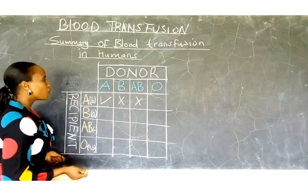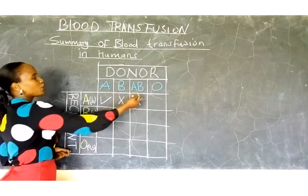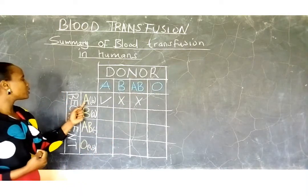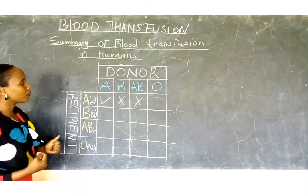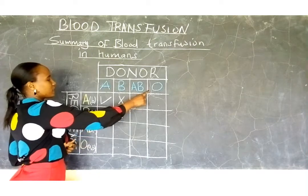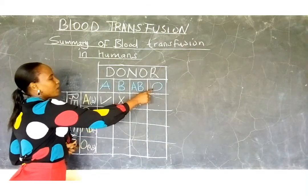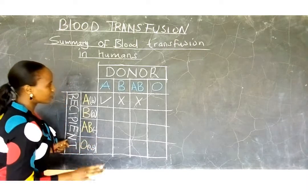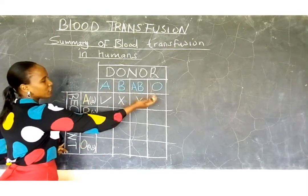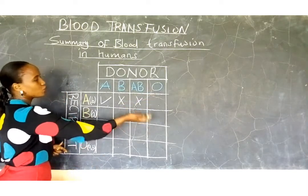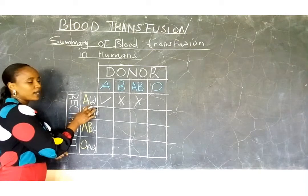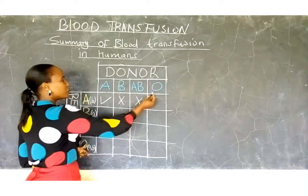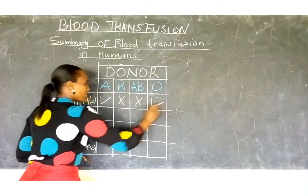What if the donor is blood group O and wants to give blood to a recipient with blood group A? Remember that blood group O has zero antigens, so there is no antigen present to be agglutinated by antibody B. Therefore, this person can give blood — it is acceptable.